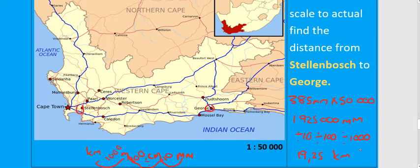Of course, this is just an example — that wouldn't be the real distance from Stellenbosch to George. So let's repeat: if you are given a ratio scale and you need to use it to find the real distance, you first take your ruler, measure from one place to another, and then multiply whatever measurement you get — in this case 385 — by the scale given, in this case 50,000, to get your real distance. The final step is to convert that distance to kilometers.